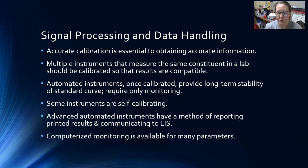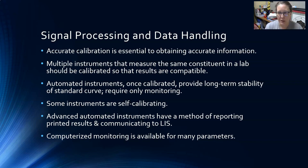Advanced automated instruments report printed results and communicate them to the lab information system, which then sends them to the charts. Most large chemistry analyzers are interfaced with the lab information system, and the software communicates results from the analyzer straight to the LIS. Results can be auto-verified and sent straight to the chart, or they may need to be reviewed by a lab tech, verified, and then sent to the patient's chart.